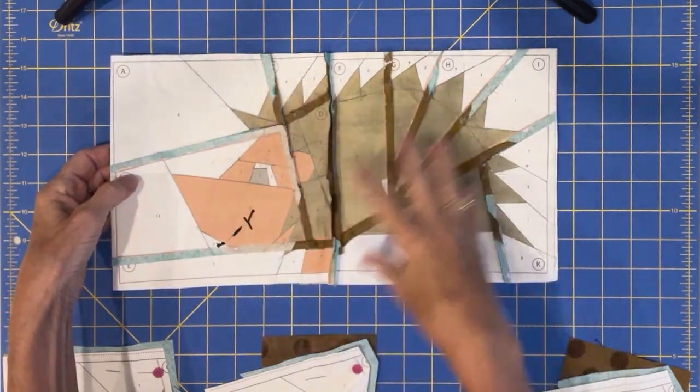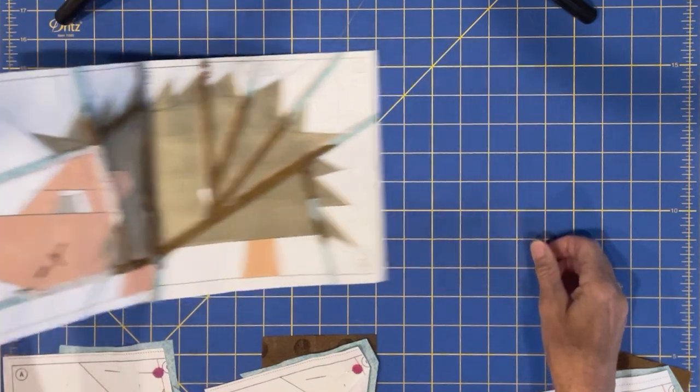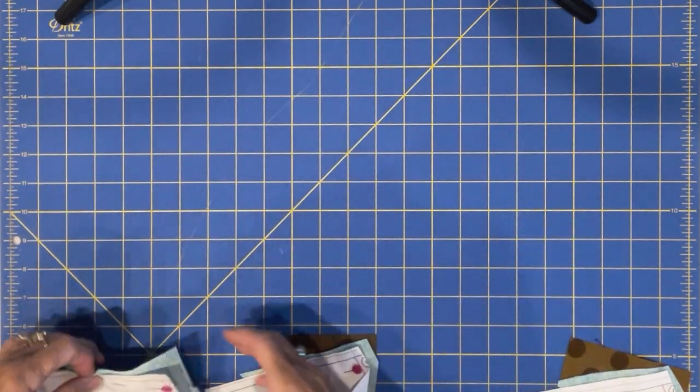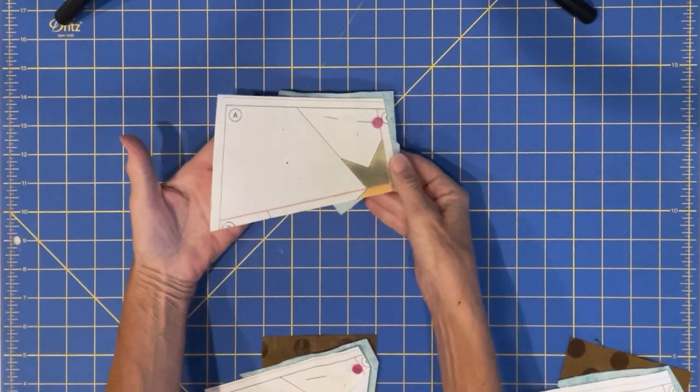And after you've cut out the pieces as it describes in the book, you're going to have segments like this.